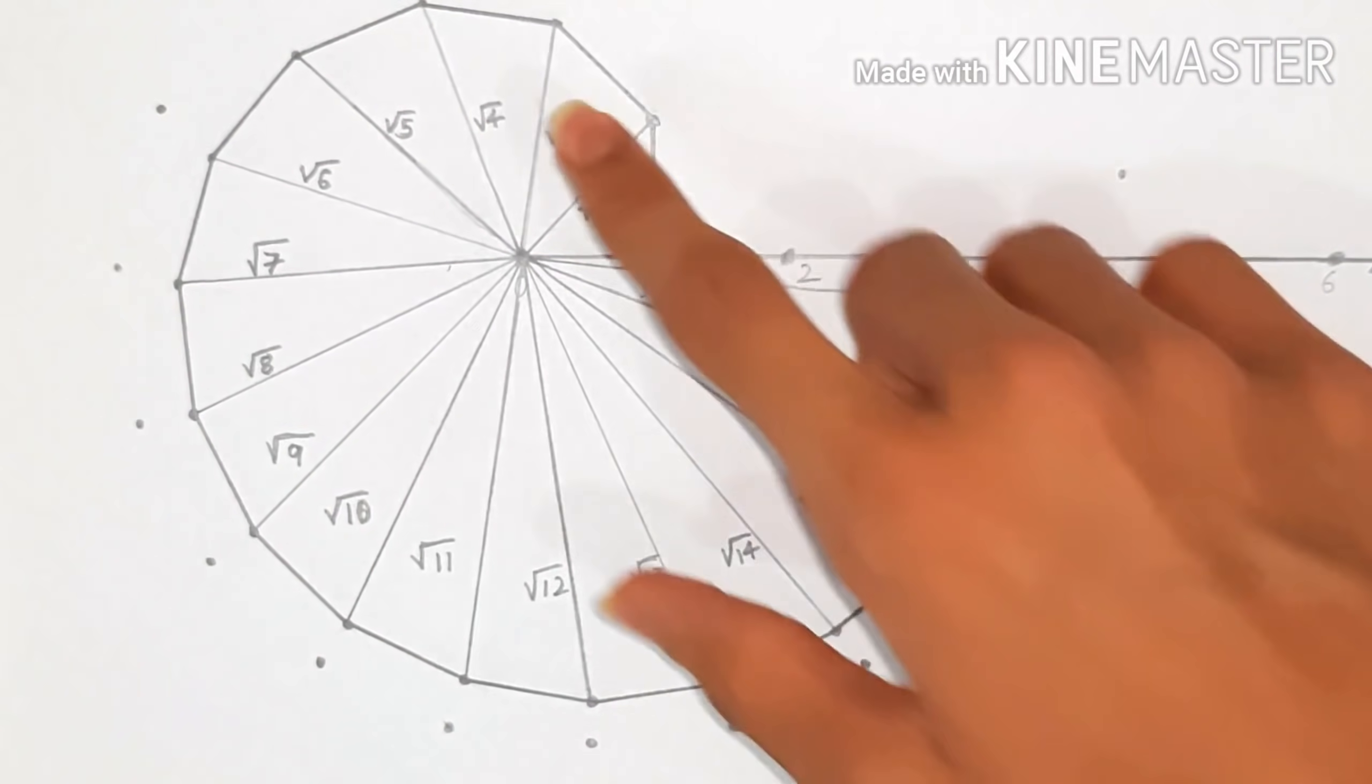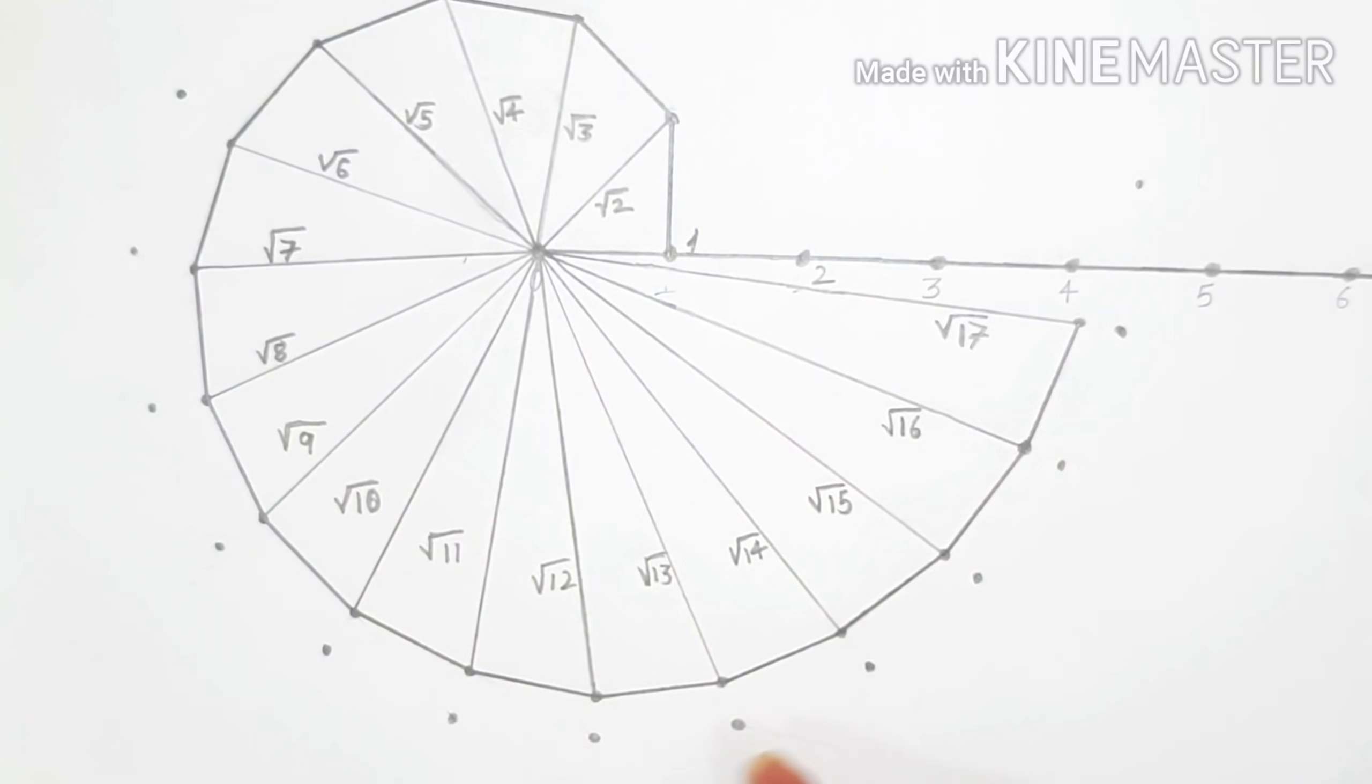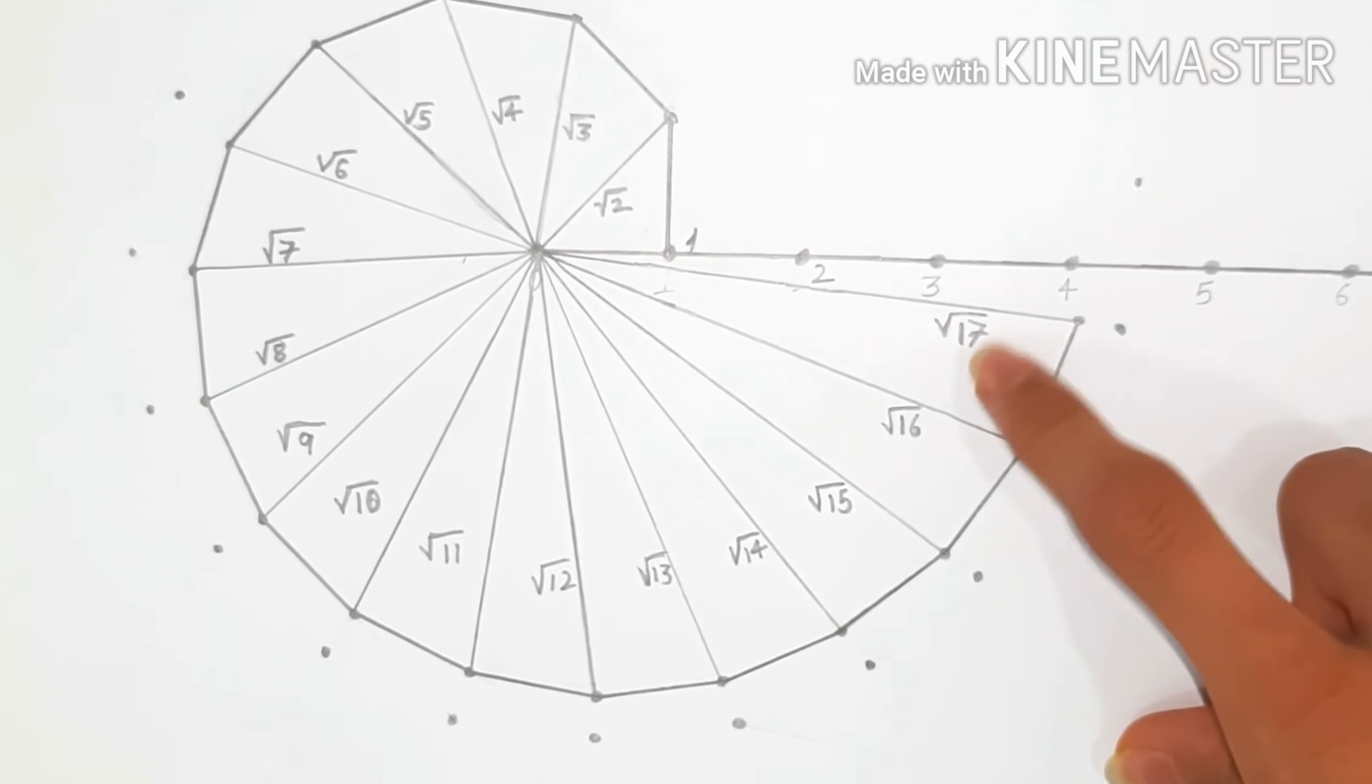So here we are with the full square root spiral. We got square root 5, 6, 7, and so on till square root 17.